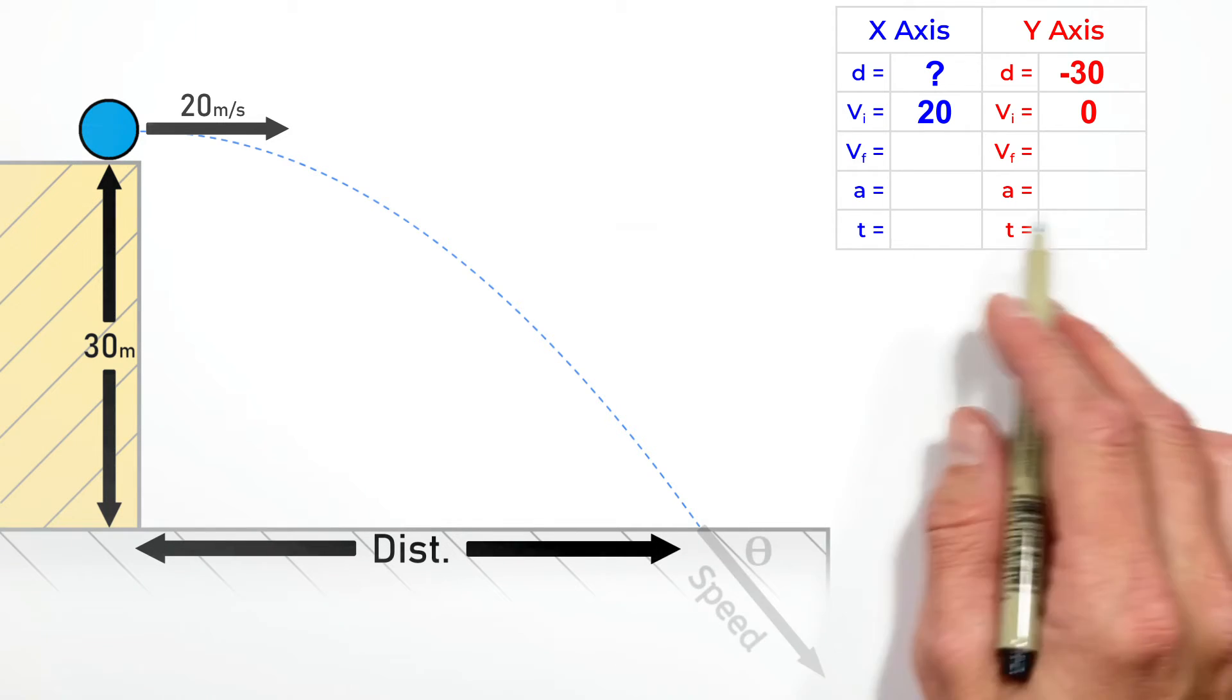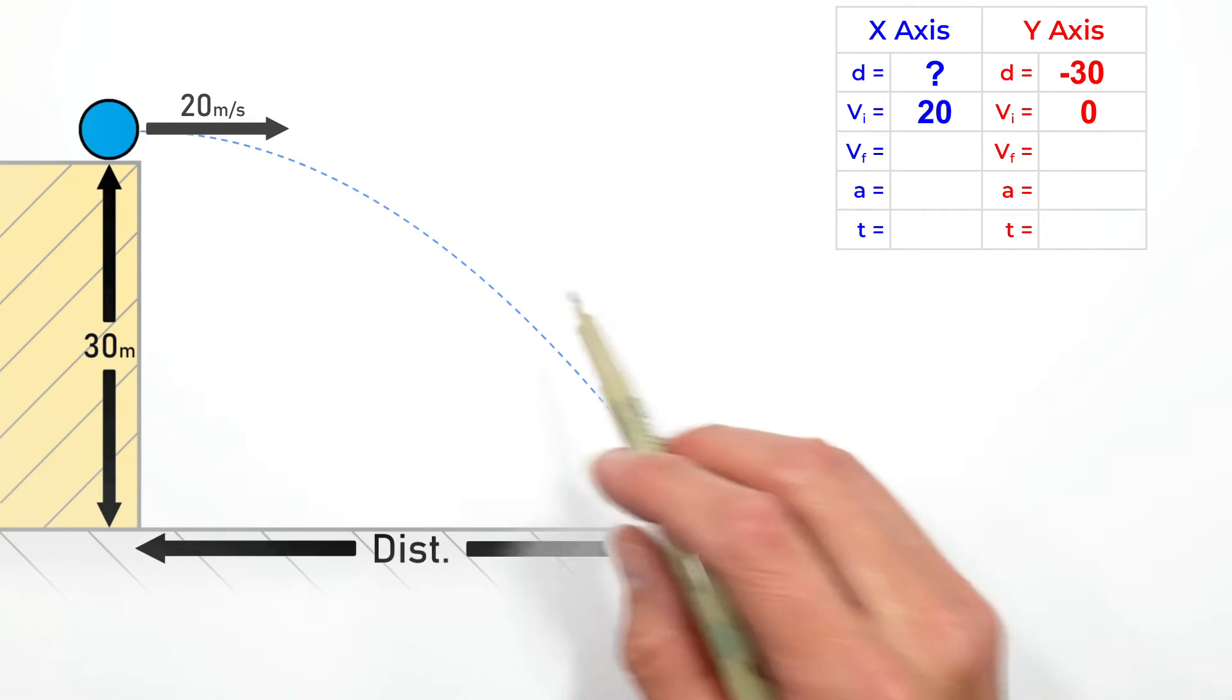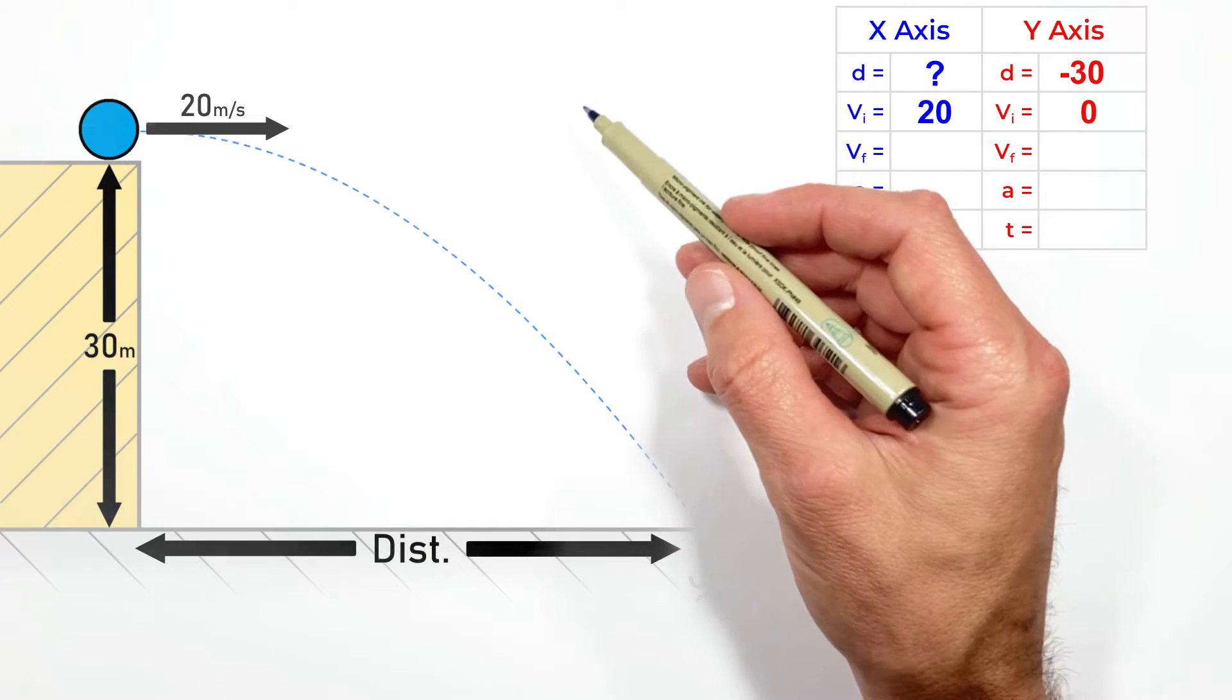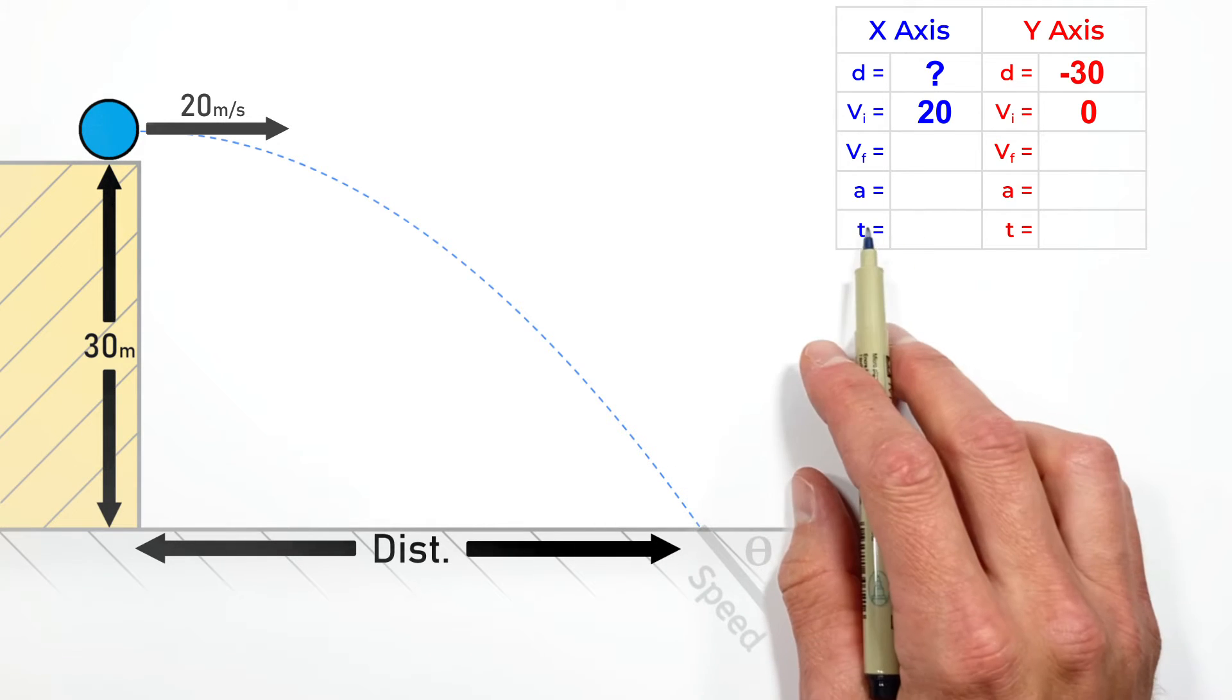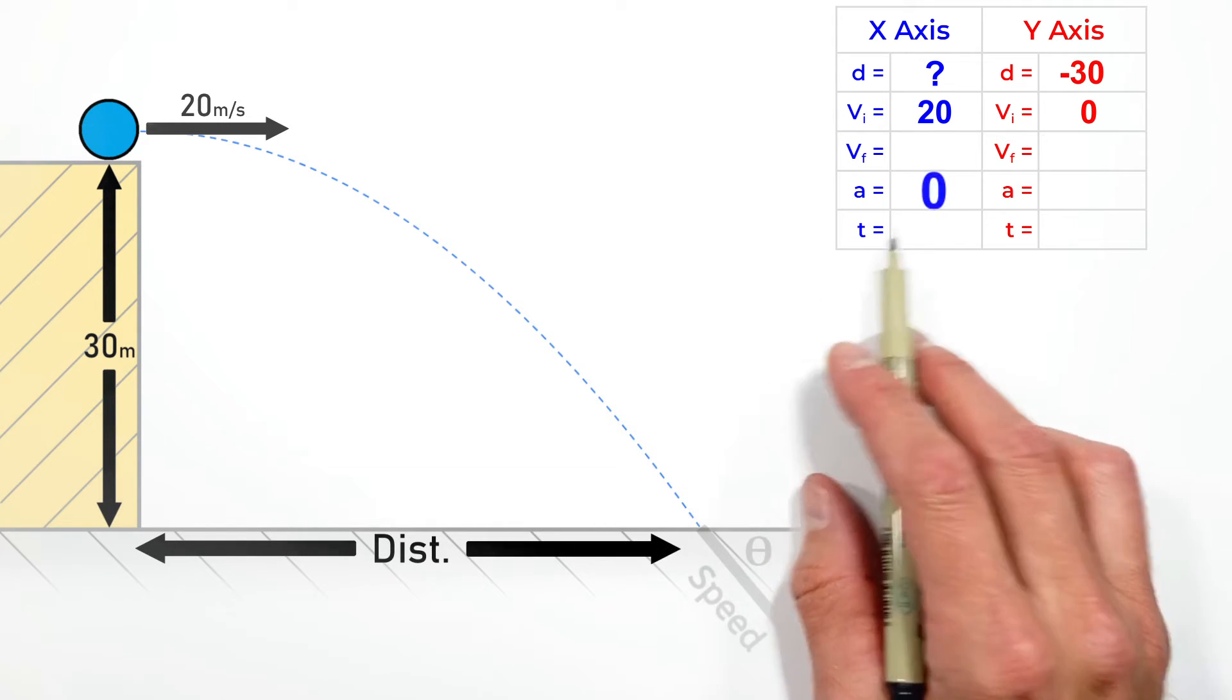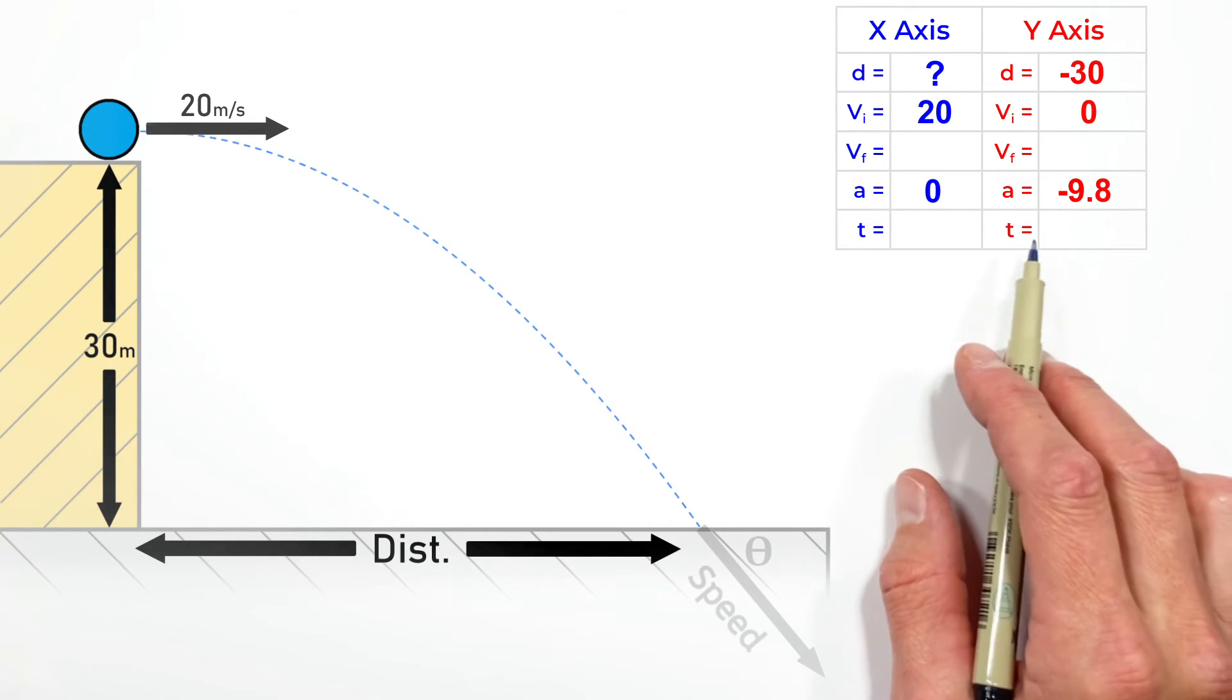We don't know the final velocity in either axis, but looking at acceleration, remember projectile motion is characterized by an object only under the influence of gravity. Horizontally the acceleration is zero, and vertically the acceleration is 9.8 downward, so I'm going to say that's negative.